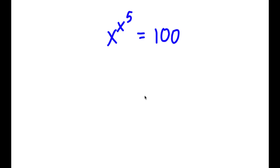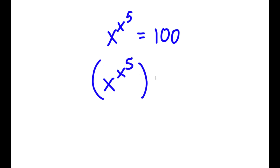In this problem, I have x to the power of x to the power of 5 is equal to 100. To solve this, I'm going to start by taking the power of 5 on both sides. So now I have x to the power of x to the power of 5, all to the power of 5, equal to 100 to the power of 5.